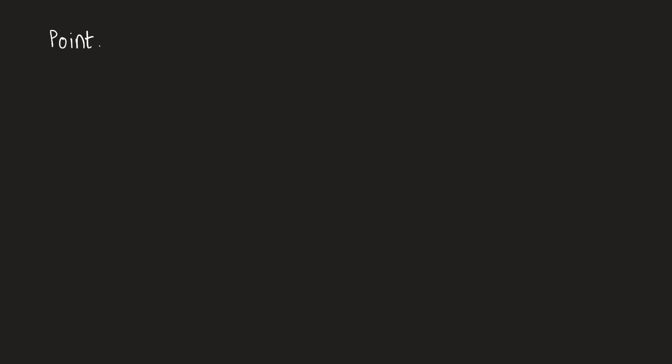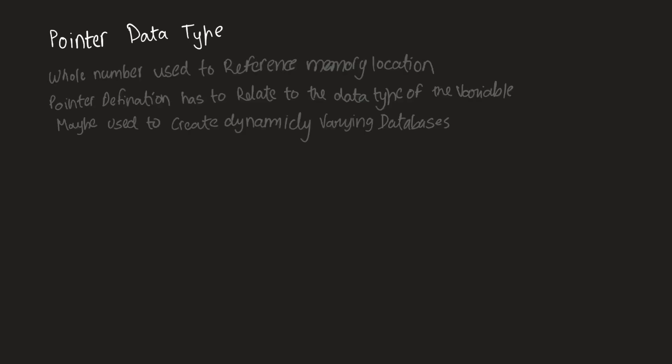So let's move to pointer data types. These are whole numbers used to reference a memory location. A pointer definition has to relate the data type of the variable. This may be used to create dynamically varying databases. I would suggest that the best way to learn what pointers are is via past papers. If you're enrolled for A levels, I will probably be doing a question on pointers at the end of the video, so stick around.